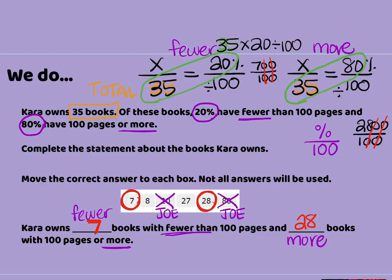You can always check yourself because these two numbers — our fewer books and our more books — should equal my 35 total books. And they do: 28 and 7 do equal 35, so that's a way to check ourselves. And that is percent proportions — go practice! Remember, percent goes over a hundred and total goes on the bottom, anytime you have percent in a problem. Anytime.